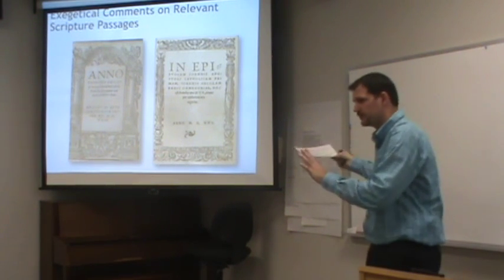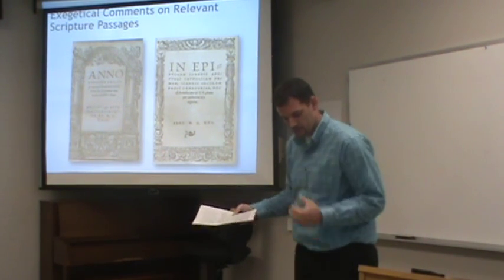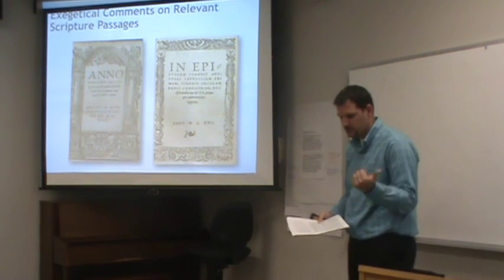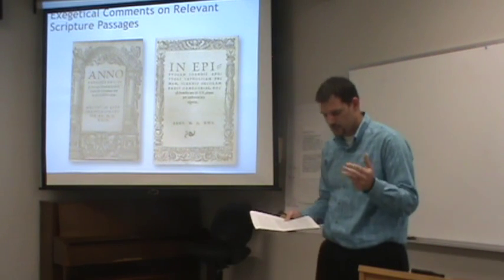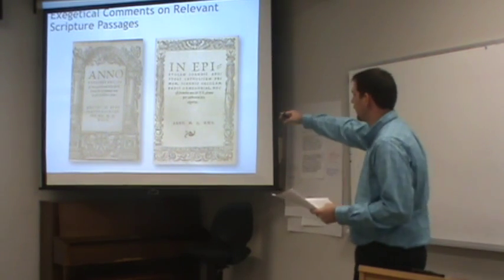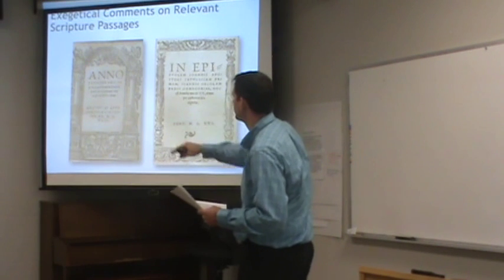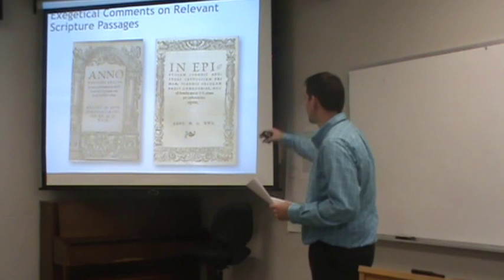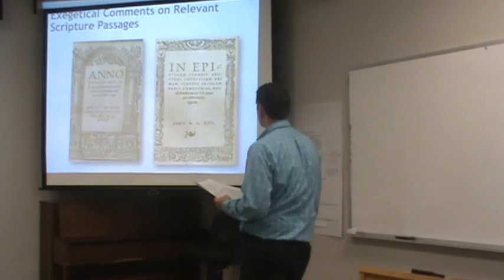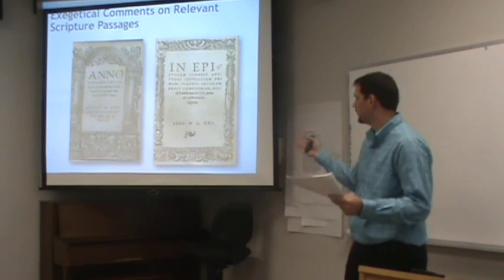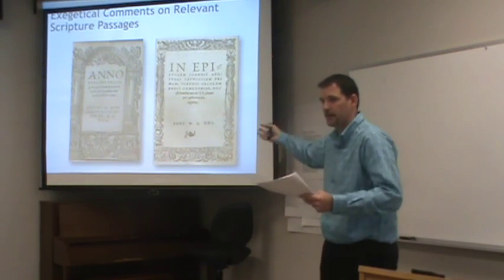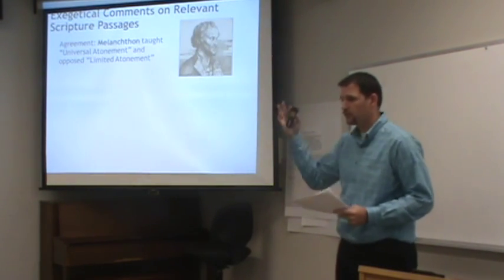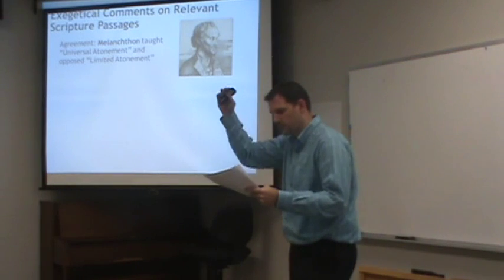The exegetical comments and relevant scripture passages I looked at come from commentaries on John, Romans, 1 and 2 Corinthians, Hebrews, and 1 John. I've given you the title pages on your handout — the one on the left is Melanchthon's title page to his Romans and Corinthians commentary, and the one on the right is Oecolampadius' on 1 John. This gives you a sample of what these look like. All these writings are in Latin, and I had to translate through them to discern their views.